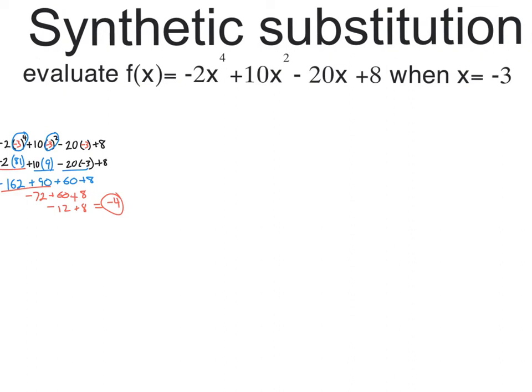Kind of like synthetic division, you have a box and then you have your coefficients, but you have to represent all the powers. So you have negative 2 right here, there is no power of 3 so you're going to have to put a 0 for the power of 3, and then a positive 10, and then a negative 20, and then an 8 at the very end.